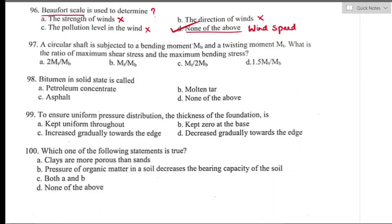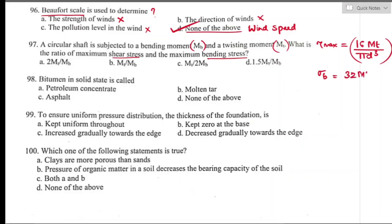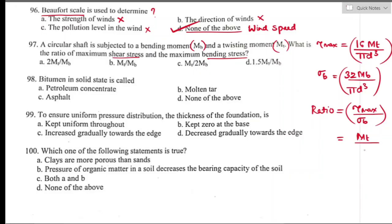Question number ninety-seven: a circular shaft is subjected to bending moment MB and twisting moment MT. The ratio of maximum shear stress to maximum bending stress: τ_max = 16MT/(πD³) and σ_max = 32MB/(πD³). The ratio = MT/(2MB). Option C is the right answer.